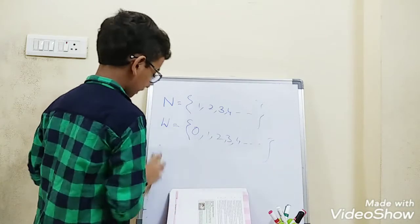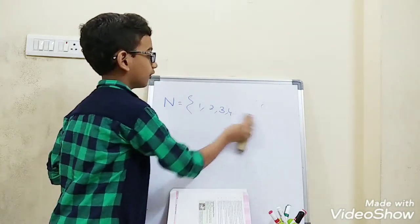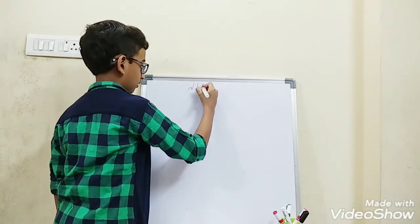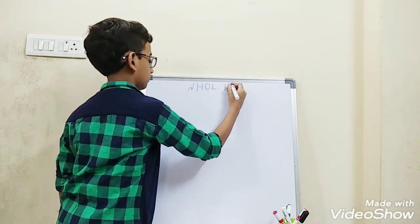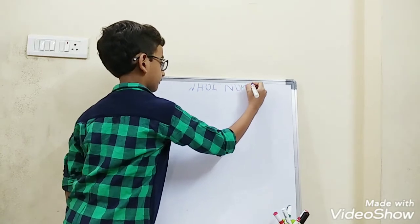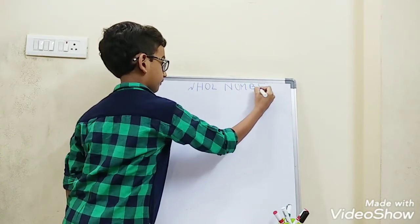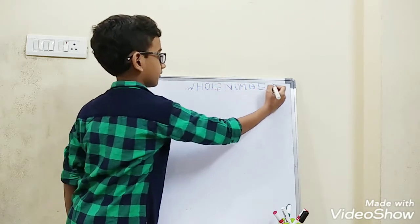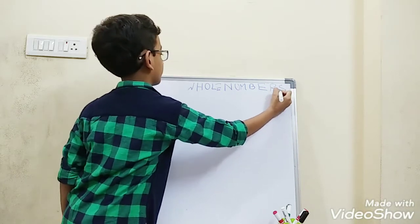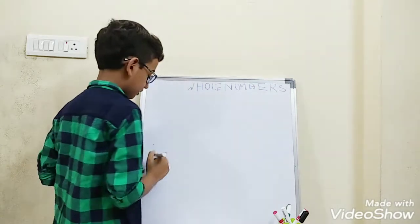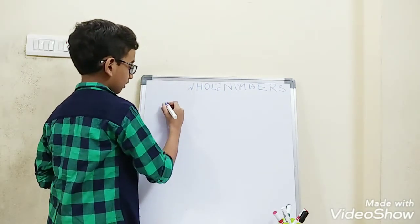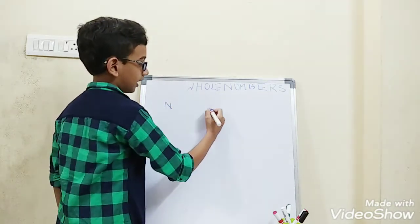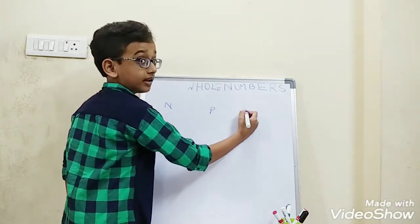So let's take an example of a table. Let's write all numbers. Let's take natural numbers and their predecessor and their successor.